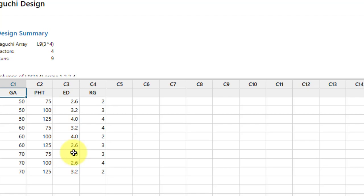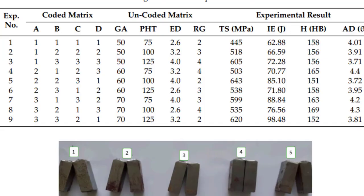In the next column, enter your response variables. My response variables are: TS (tensile strength, measured in MPa), IE (impact energy, measured in joules), H (hardness, measured in Brinell), and AD (angular distortion, measured in degrees theta).